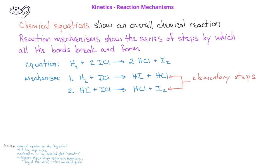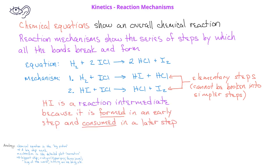Elementary steps cannot be broken down into simpler steps. We also notice in this mechanism that we have the HI molecule as a product in an early step and then it's used up or consumed in a later step. We call such species reaction intermediates. Reaction intermediates are not part of the overall chemical equation.